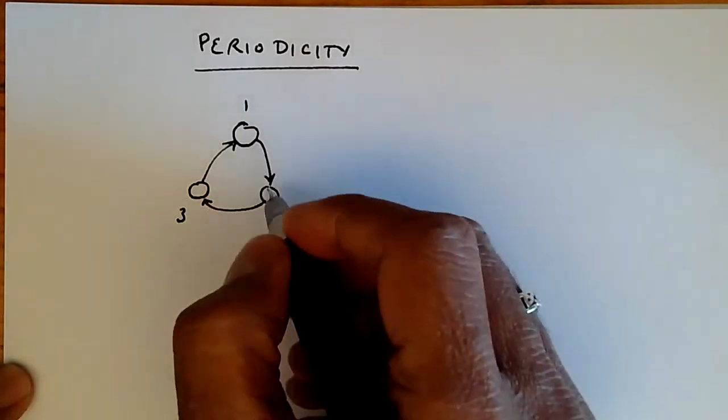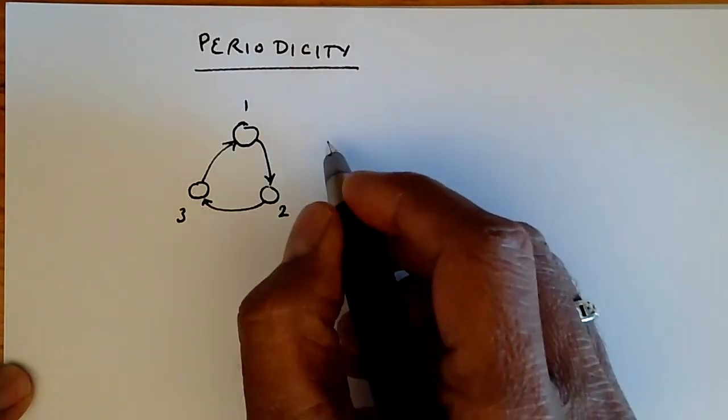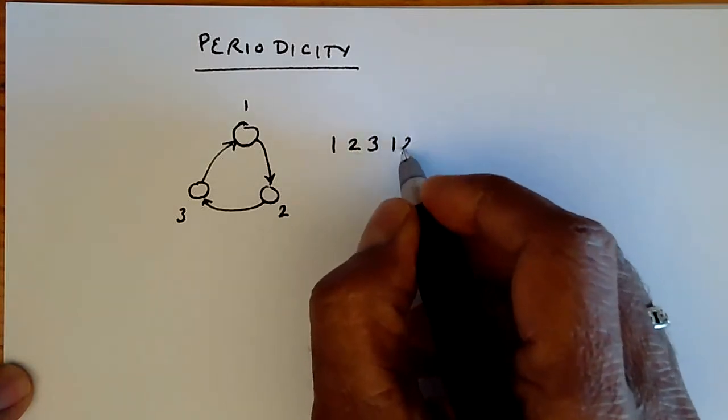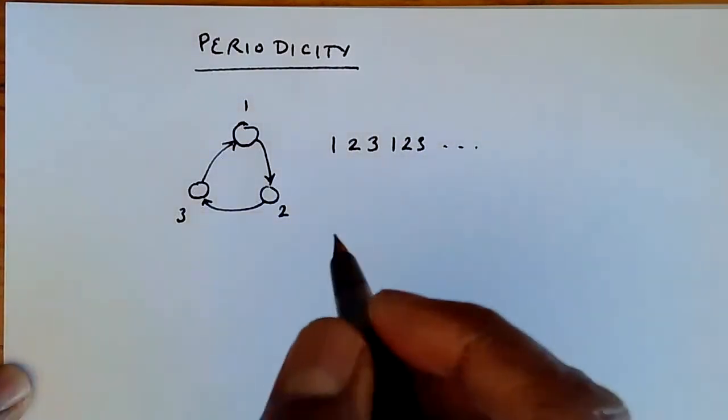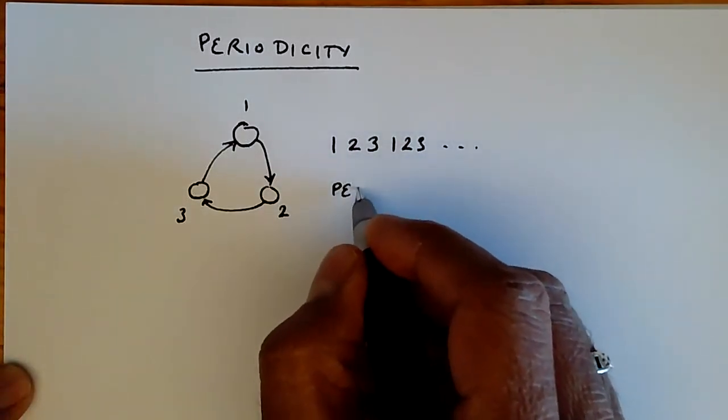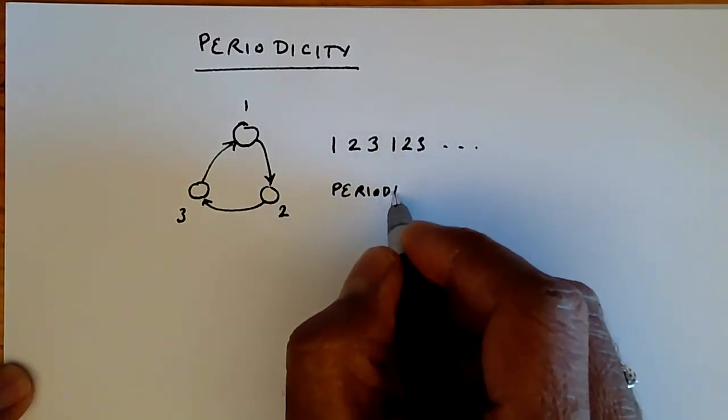And we will re-enter state 1 every three time steps because we'll have the state transitions as being 1, 2, 3, 1, 2, 3, etc., all the way over. And in this case, all three states would be periodic with a period of 3.